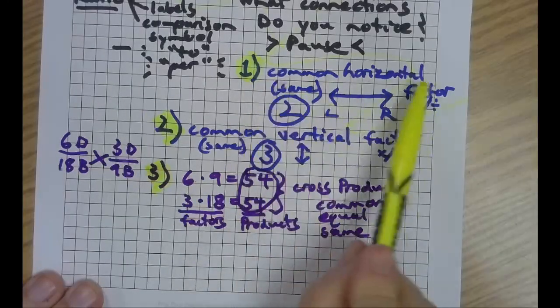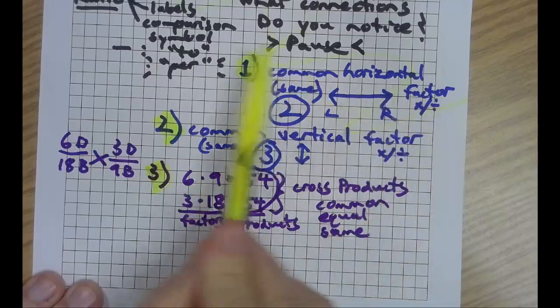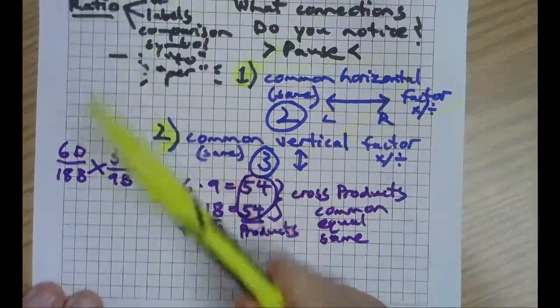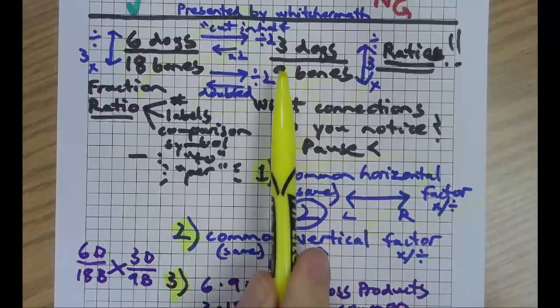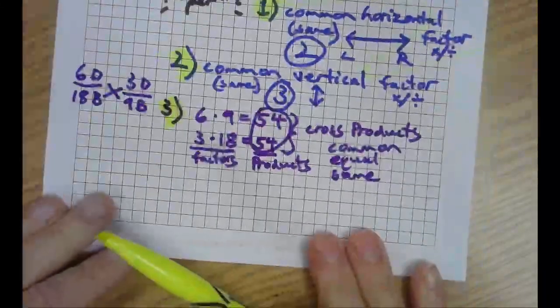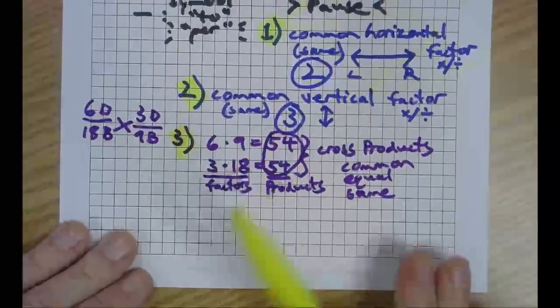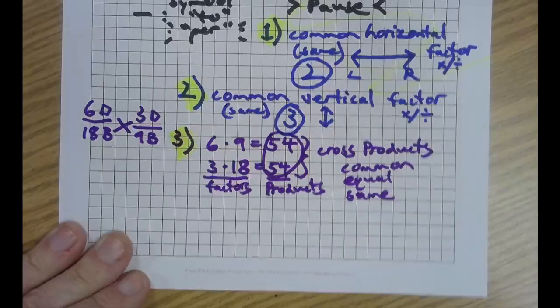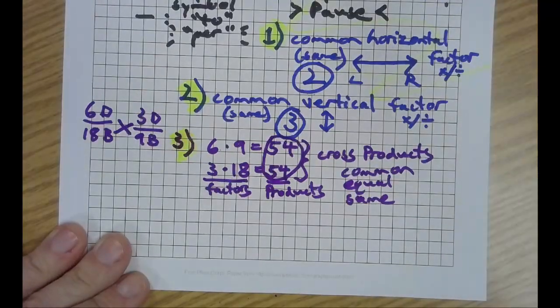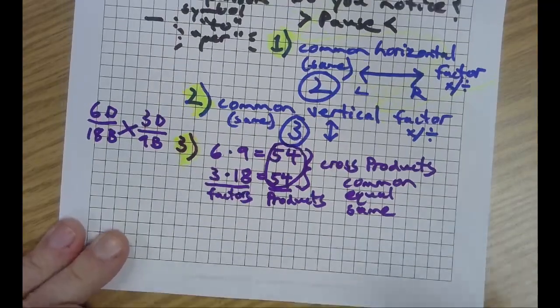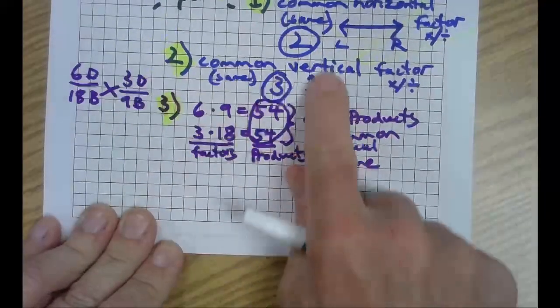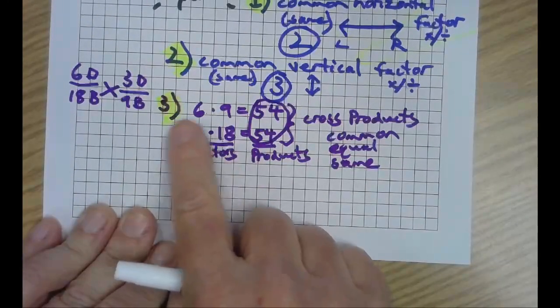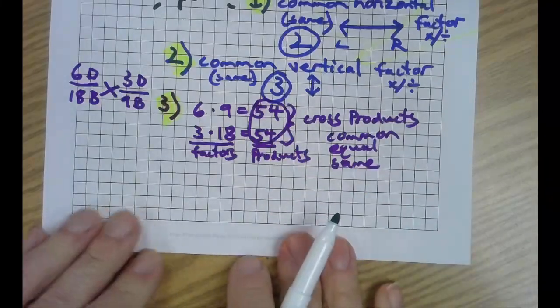So three things when we're checking to see if something is a proportion. It is a common horizontal factors. 2 in this case. 18 divided by 2 is 9. 9 times 2 is 18. Any common vertical factors? Excuse me. I need to get in. Open the door. And finally, vertical means what? Up and down. Yes. And then we did cross products, which are the same.